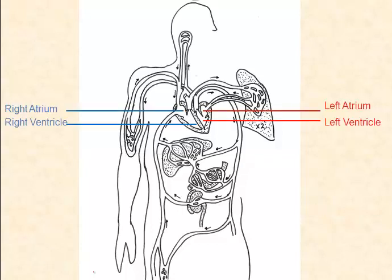If we take a look at the heart, we should be able to recognize the right atrium, the right ventricle, the left atrium, and the left ventricle. Now that we have our orientation, let's take a look at some major blood vessels.